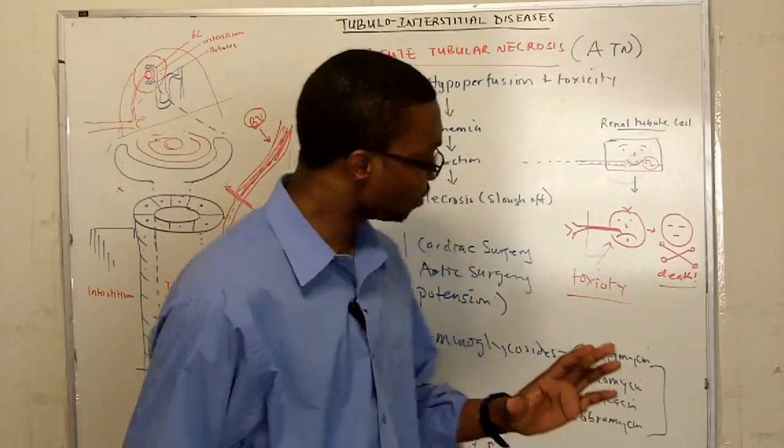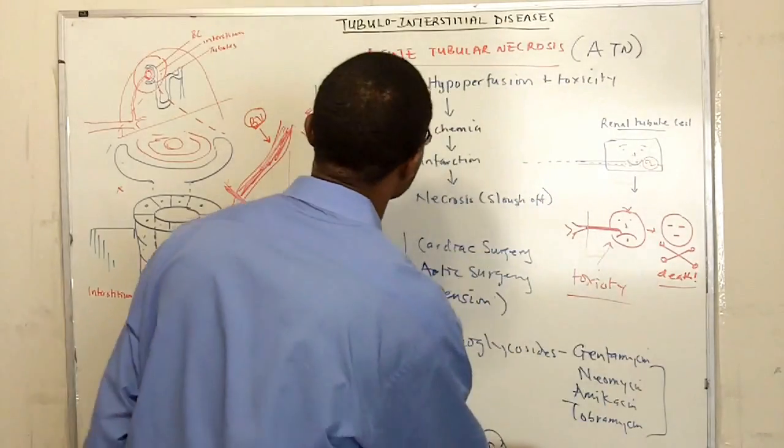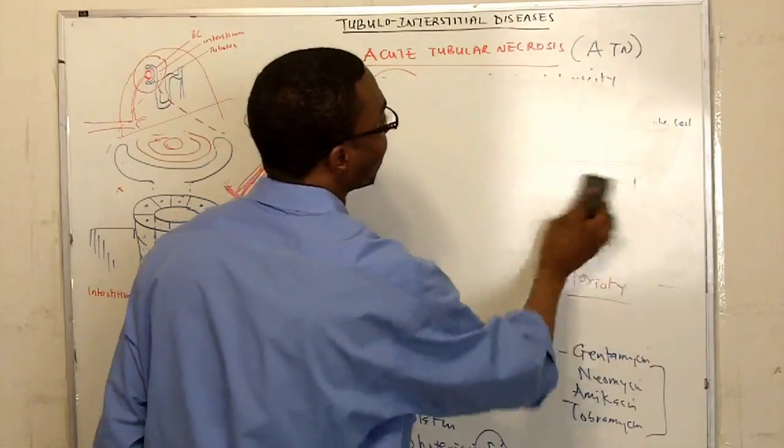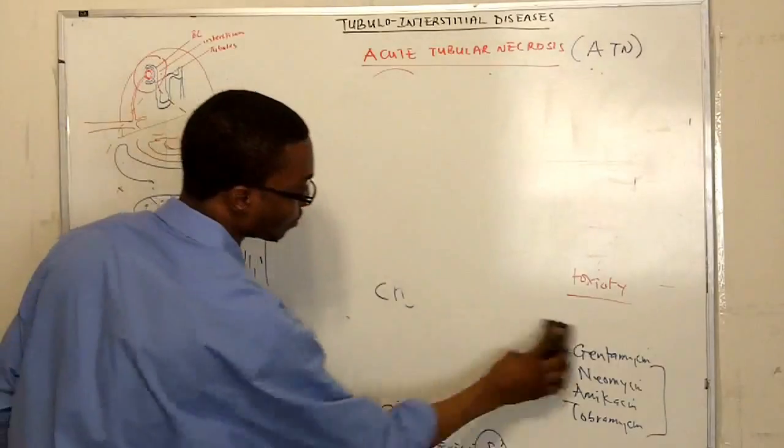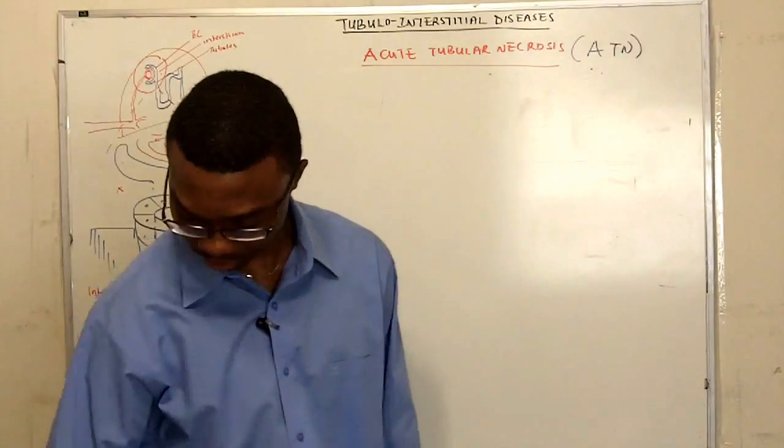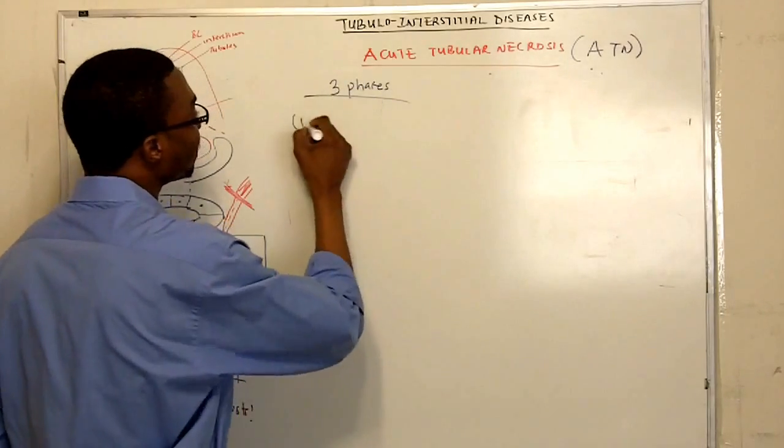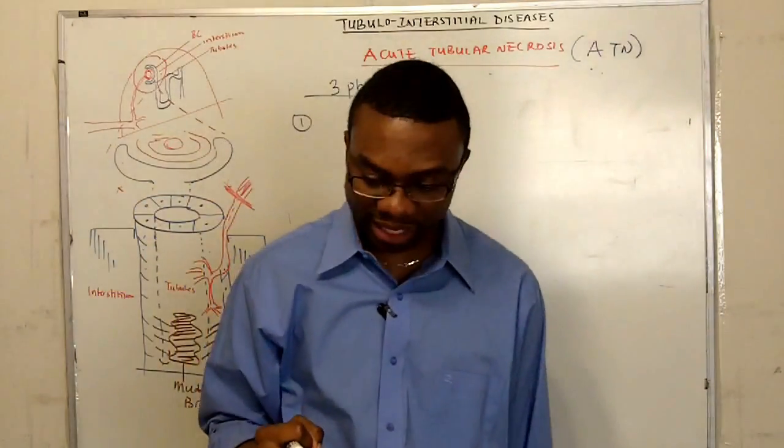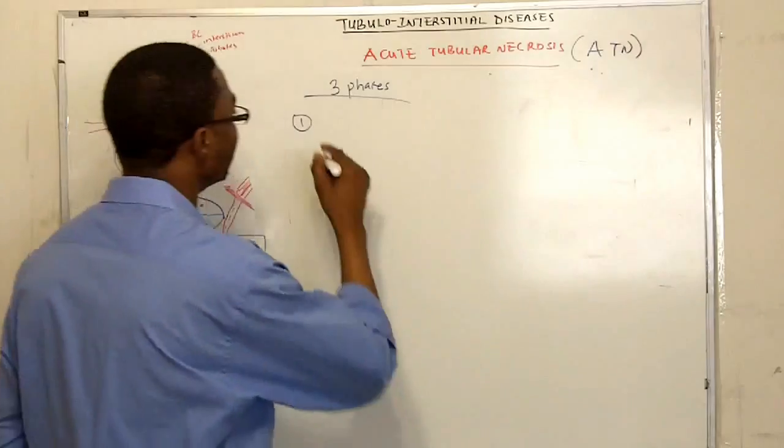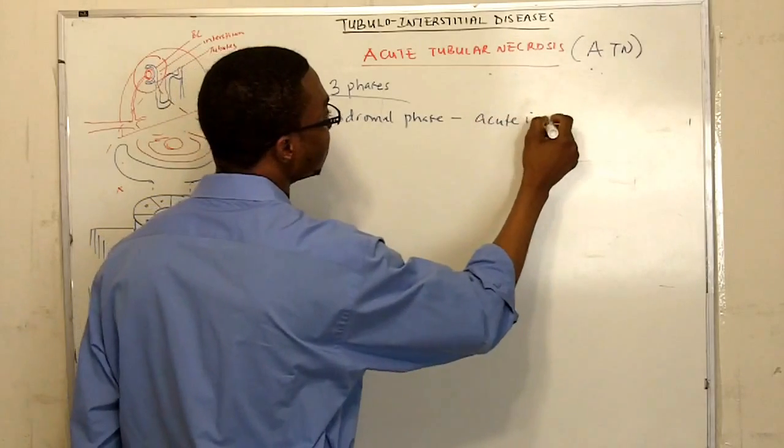There's three phases for this renal tubule cells to develop and die and become necrotic. See what happens? You become toxic and you die. Since there are three phases, what do you think the first phase is going to be? They have hyperperfusion to the kidneys. This is very acute onset. This is just new injury that's been happening. So, this is called the prodromal phase. And this is basically the acute phase of injury.